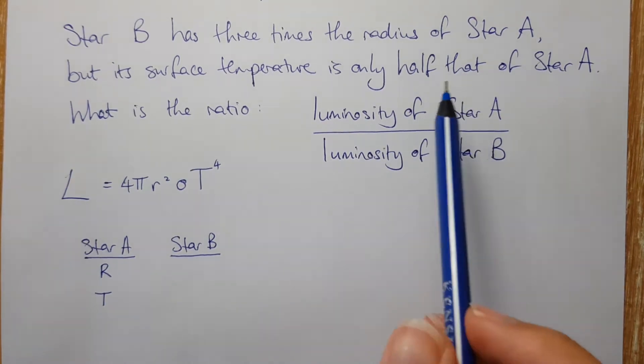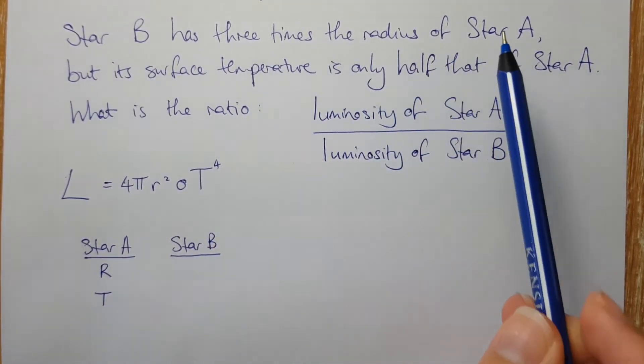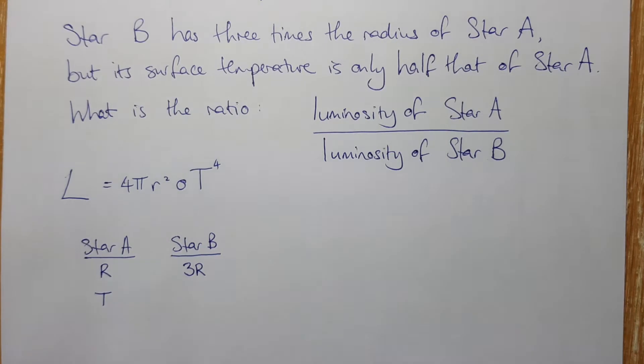Now we're told in the question that star B has three times the radius of star A. So that means if star A is capital R, star B is three times capital R.